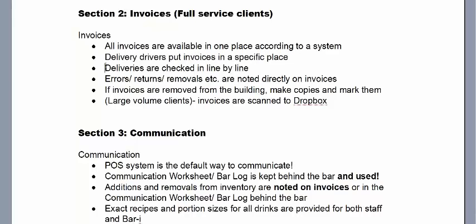When checking in deliveries, put new product separate from existing inventory so you can tell which is which. Then check those deliveries line by line. Rather than just signing for a stack of product, go through each line — if it says Jack Daniels 12 bottles, find those 12 bottles, tick or sign next to that line, and continue through all items. Be diligent: see what's listed, confirm it's there in real life, sign it, and move on.